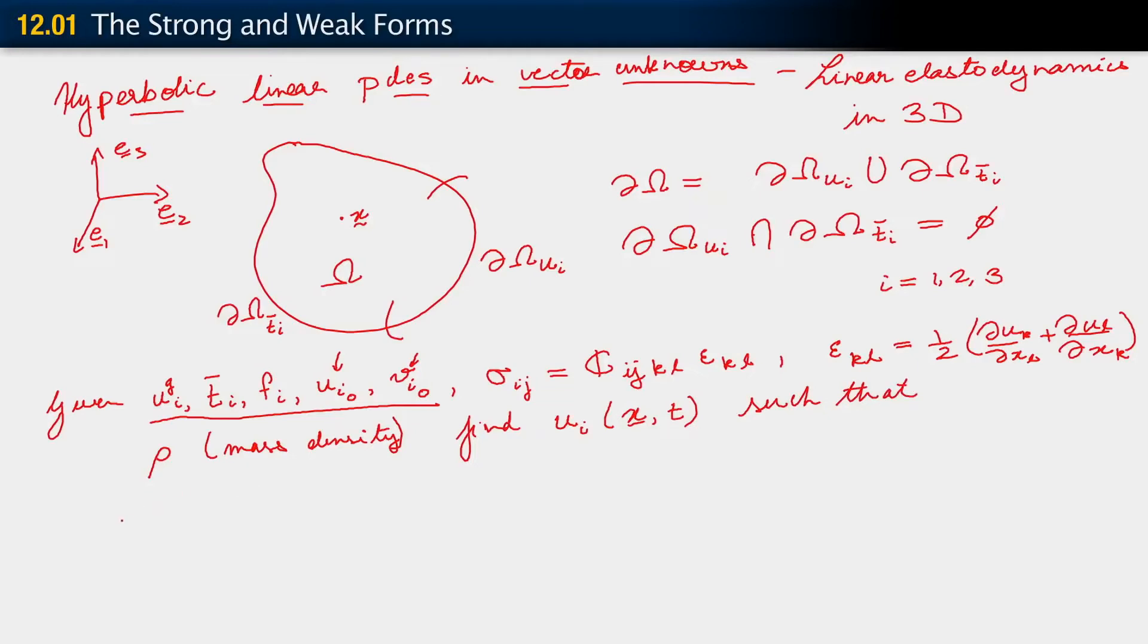Such that the following holds. Rho, second derivative of u_i with respect to time equals sigma_ij comma j plus f_i, in omega cross 0 comma t. Just as we did for the time dependent parabolic problem, we say that our PDE must hold over the spatial domain and the time interval zero to t.